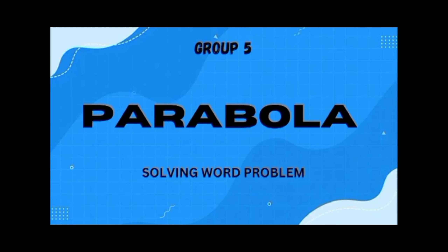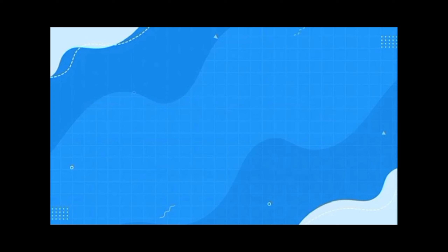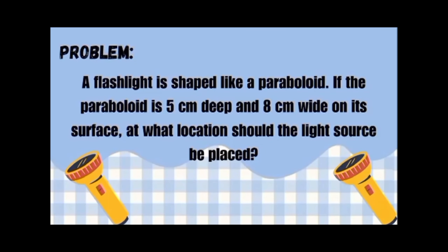Hello everyone! We are about to discuss how to solve a word problem using a parabola. Here's our problem: a flashlight is shaped like a paraboloid. If the paraboloid is 5 cm deep and 8 cm wide on its surface, at what location should the light source be placed?